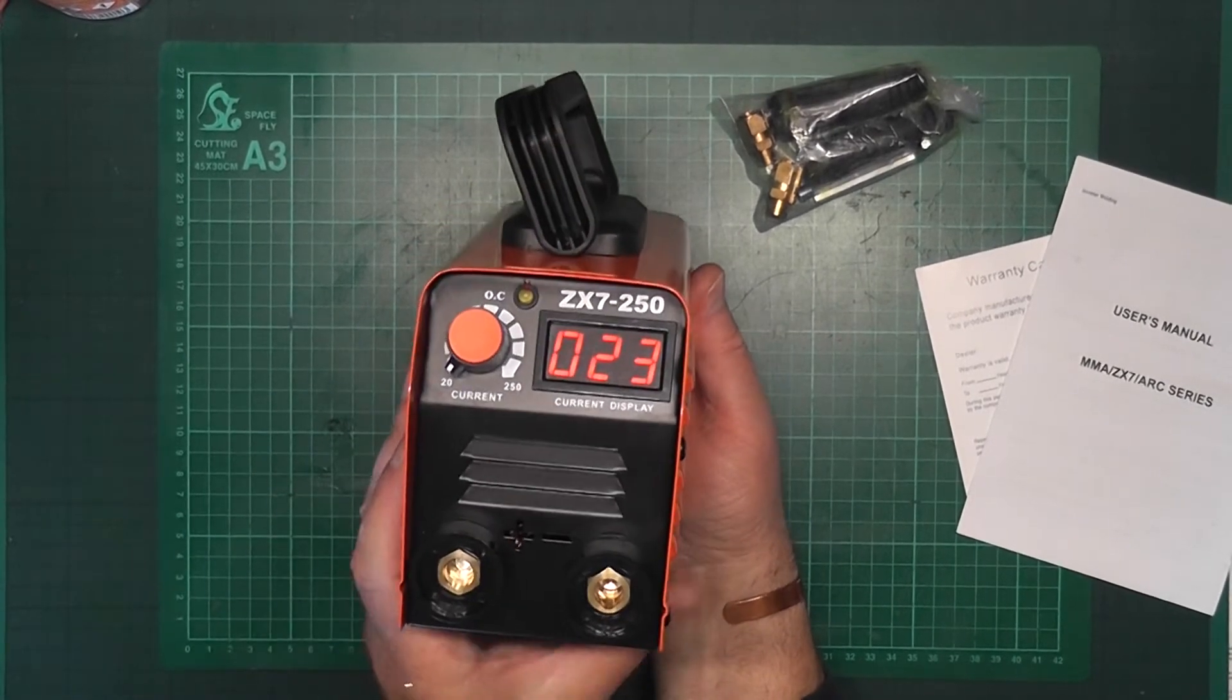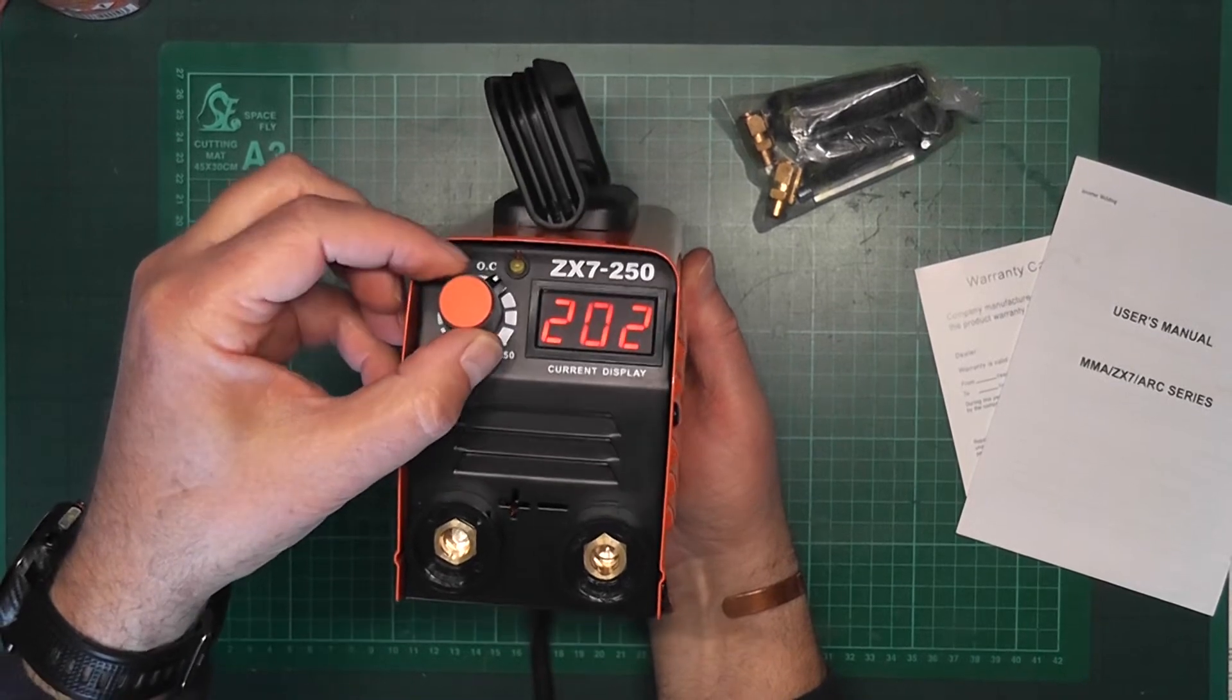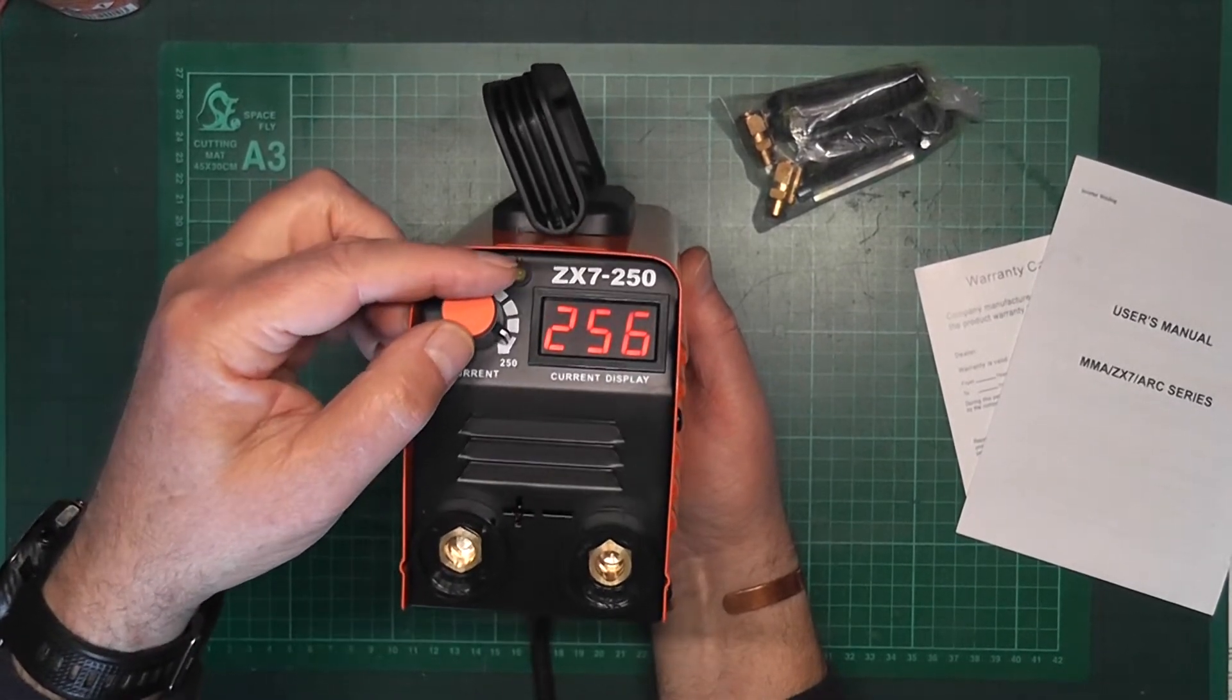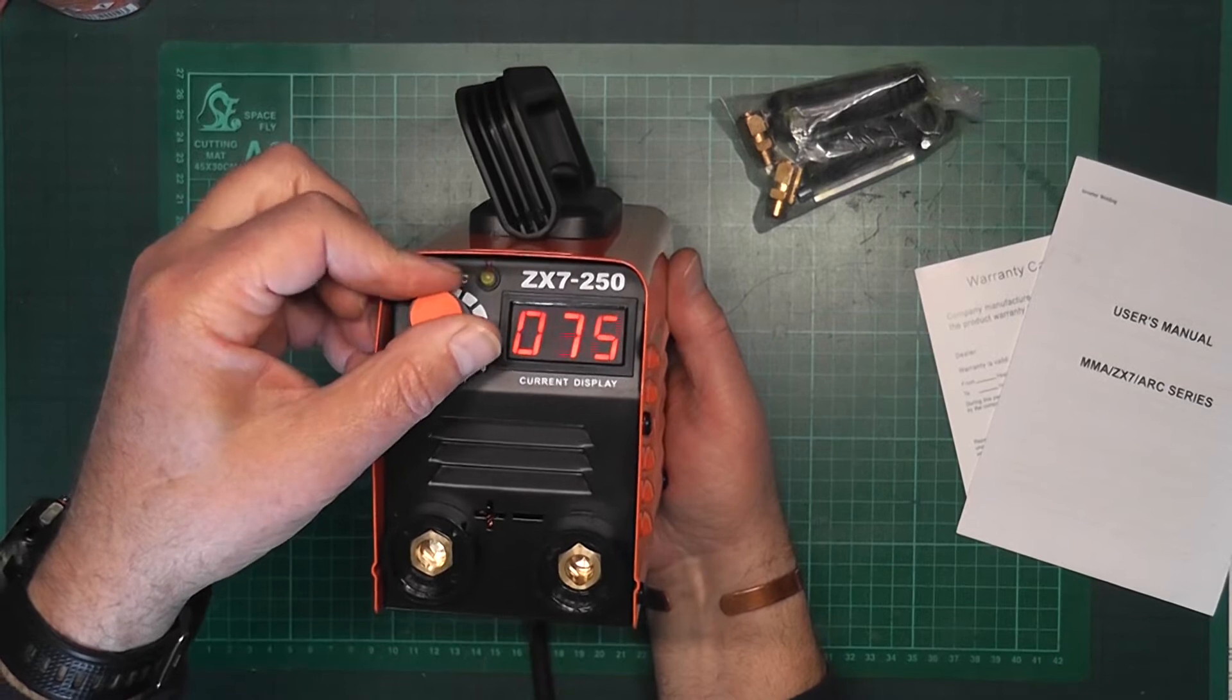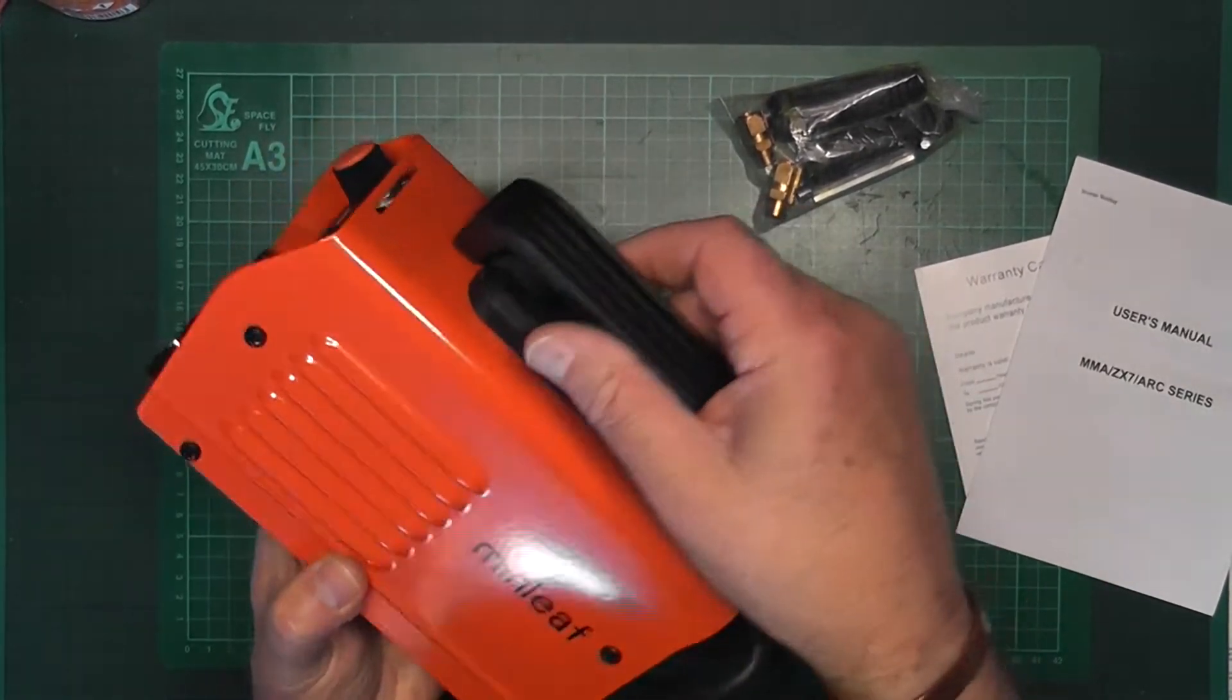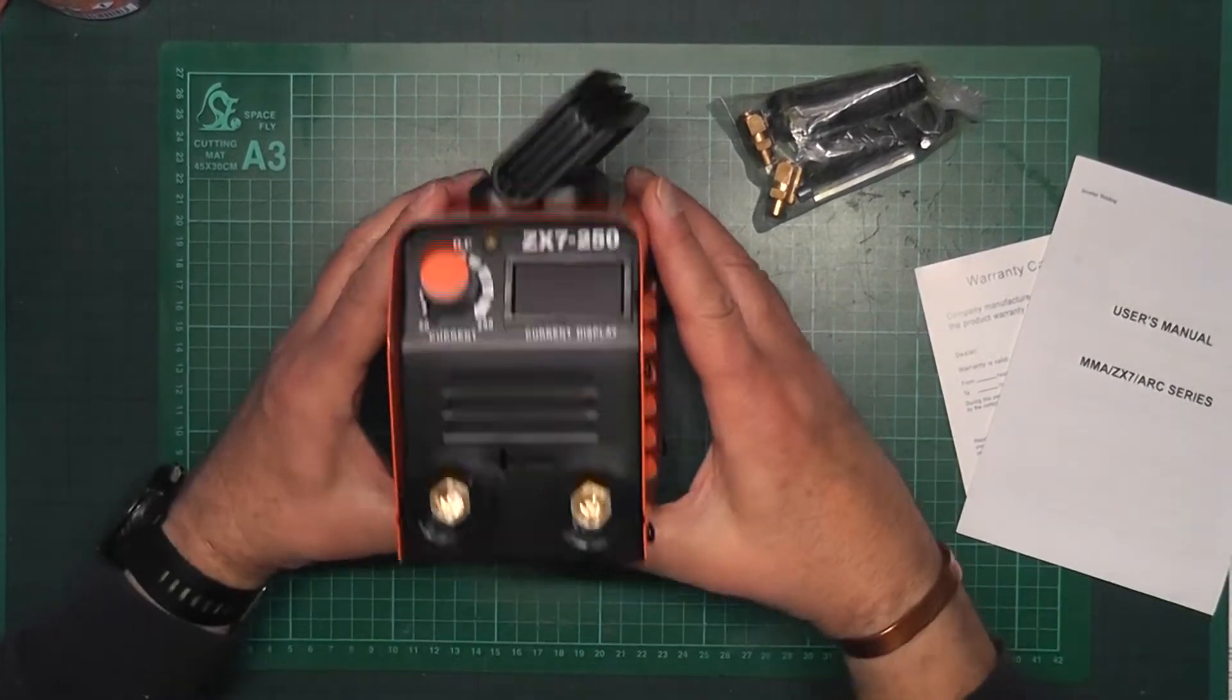So we have the fan is running, telling me it's 23 amps at the moment. You can put it up, and it's now saying 256 at the 250 mark. Now it may or may not be accurate, but generally it's a guide. Switched it off there, it's a bit noisy. Power down completely, remove it from any power source.